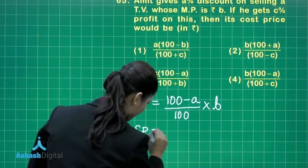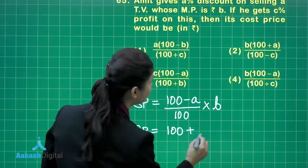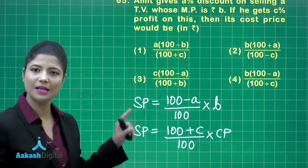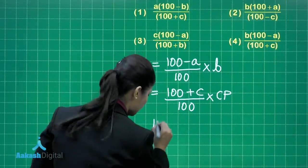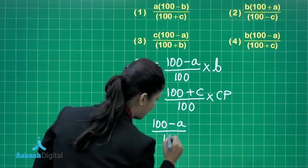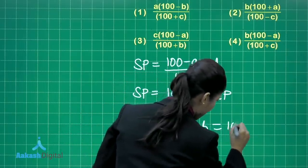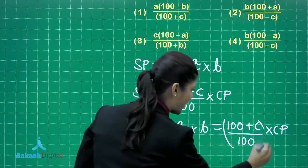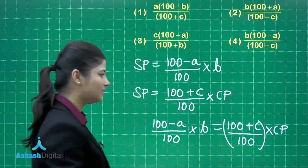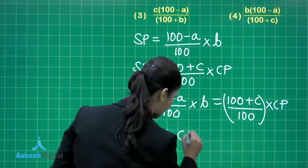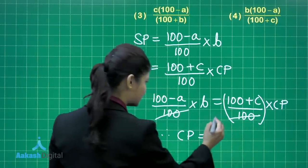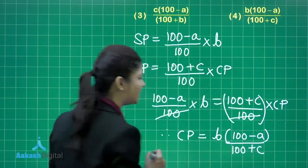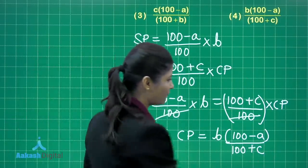The selling price using profit percent is (100 plus profit percent c) upon 100, multiplied by cost price. Both expressions give the selling price of the same article, so they can be equated: (100 minus a) upon 100 times b equals (100 plus c) upon 100 times cost price. Transposing, the cost price equals b times (100 minus a) upon (100 plus c).